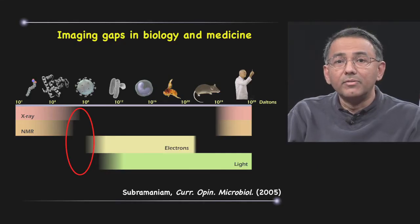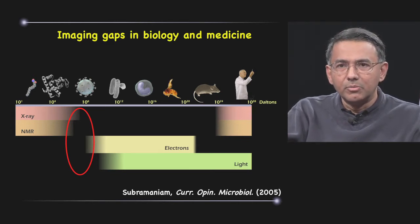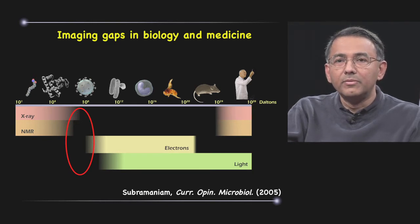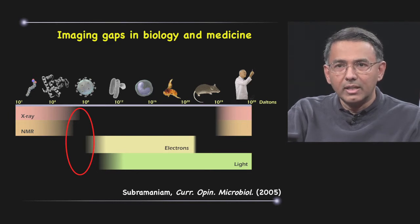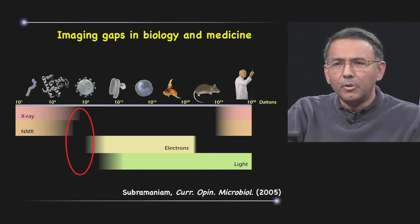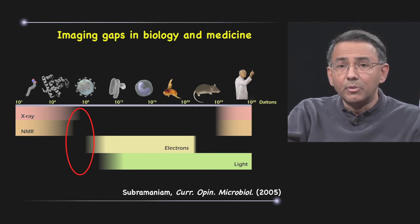X-ray and NMR methods have been very powerful at the twin ends of the size spectrum in imaging molecules all the way to imaging macroscopic entities, while light and electron microscopy have been very powerful to look at some of the objects in the middle, such as cells and tissues.